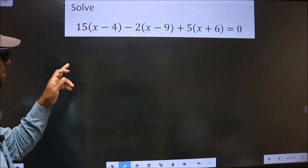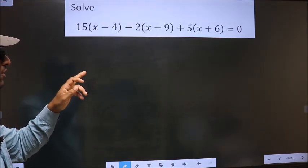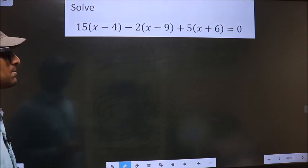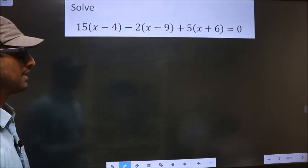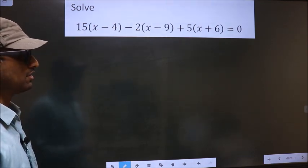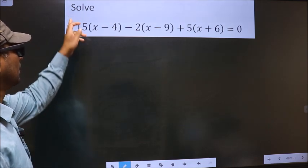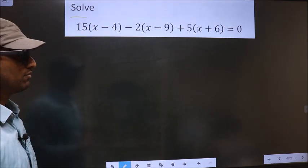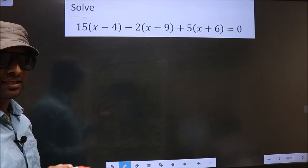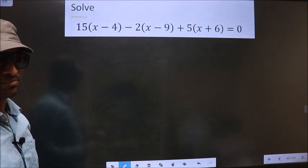Solve 15 brackets x minus 4 minus 2 brackets x minus 9 plus 5 brackets x plus 6 equal to 0. They told us to solve, so we should find the value of x.